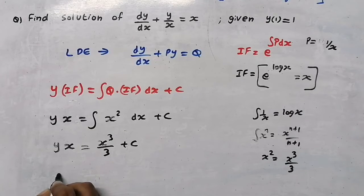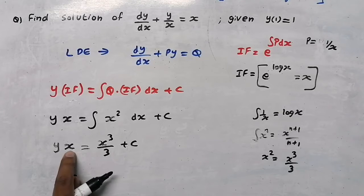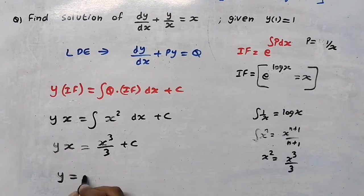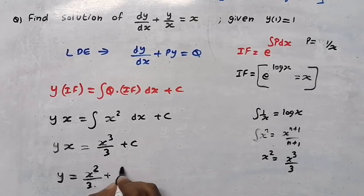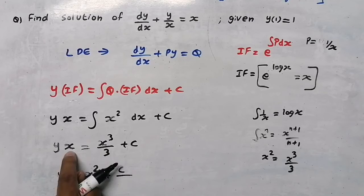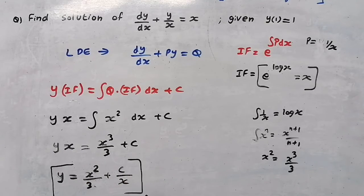We always write the solution in terms of y. Moving x to the other side: y = x³/(3x) + C/x, which simplifies to y = x²/3 + C/x. This is the general solution of our linear differential equation.